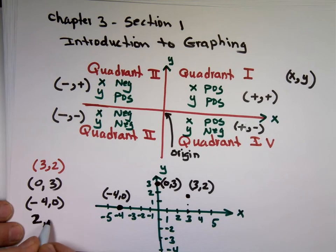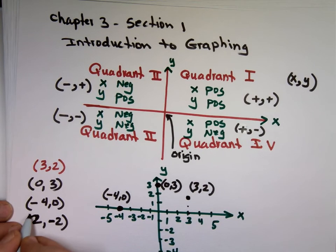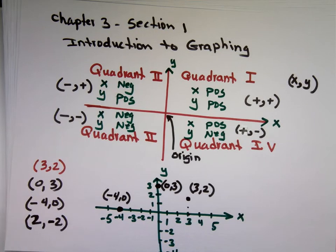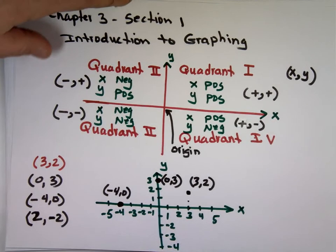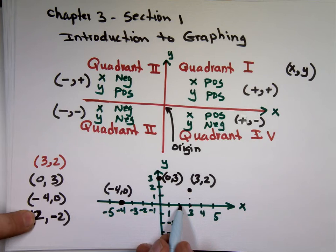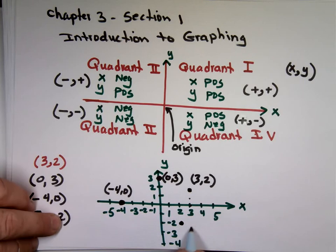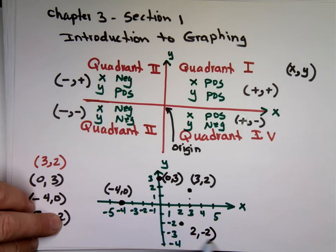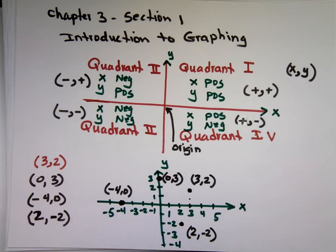(2,-2). Start at the origin, which is right here. Move it 2 units in the x direction, then negative 2, which means 2 down in the y direction. I think most of you are seeing this in high school.